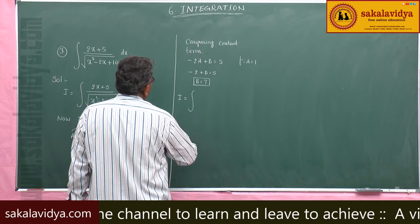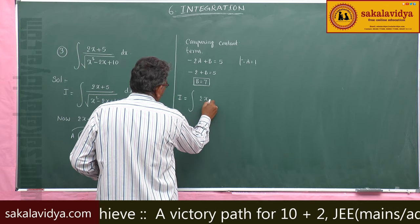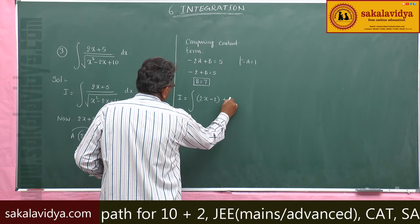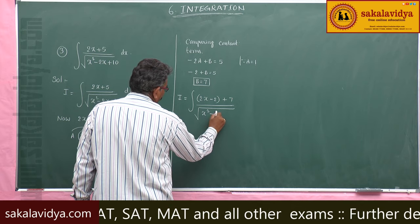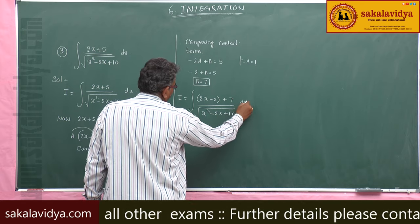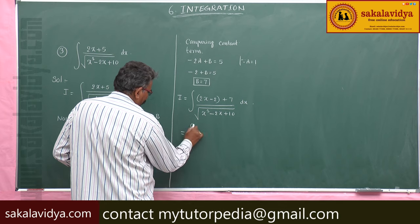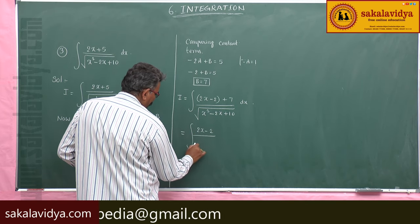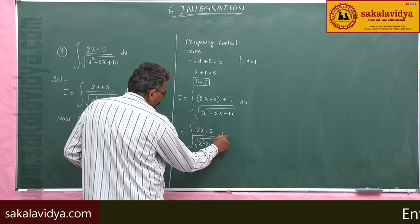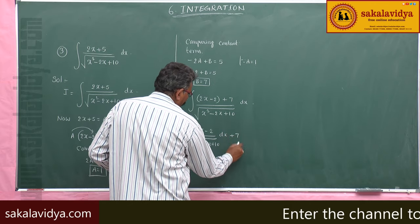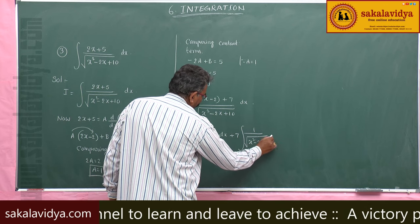Now I equals the integral of (2x - 2 + 11) by root of (x² - 2x + 10) dx. We split this into the integral of (2x - 2) by root of (x² - 2x + 10) dx, plus 7 times the integral of 1 by root of (x² - 2x + 10) dx.